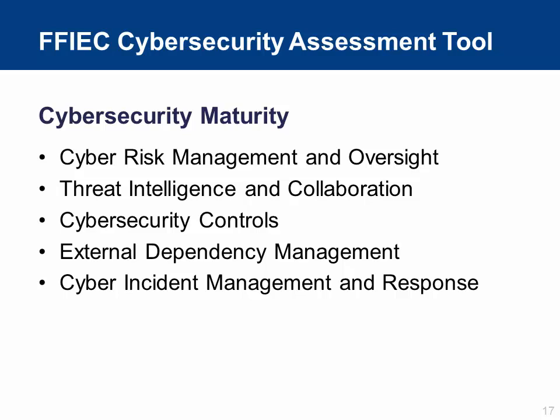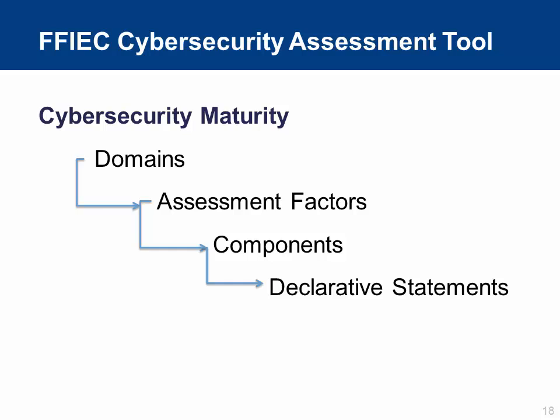The second part of the assessment is cybersecurity maturity. Once management understands the institution's inherent risk, both overall and in relation to specific activities, products, and services, management can assess its level of cybersecurity maturity according to five domains. These five domains are: cyber risk management and oversight, threat intelligence and collaboration, cybersecurity controls, external dependency management, and cyber incident management and response. Within each domain, there are assessment factors, and under those, contributing components with declarative statements describing activity that supports the assessment factor at that level of maturity.